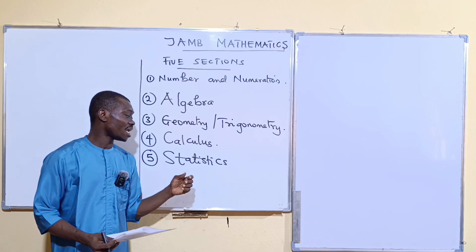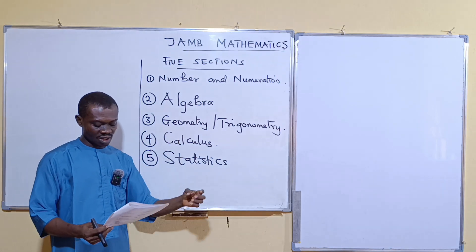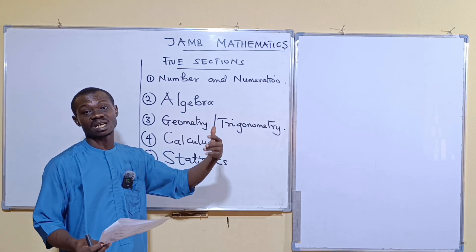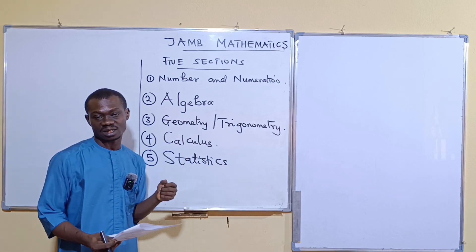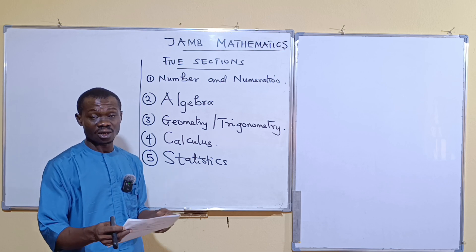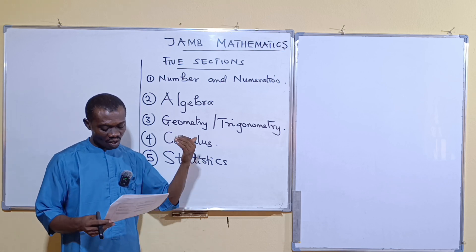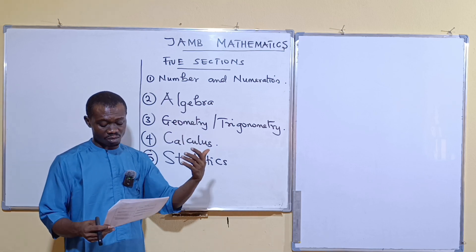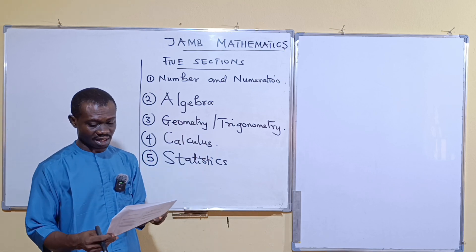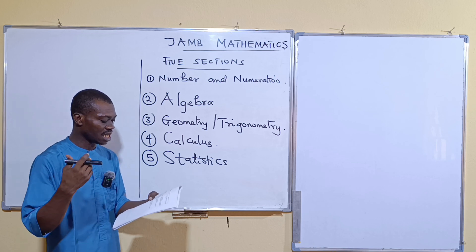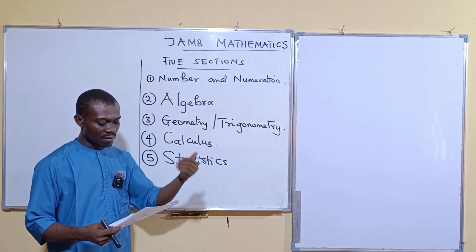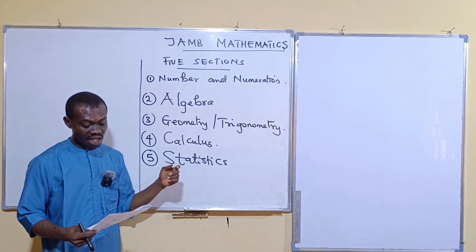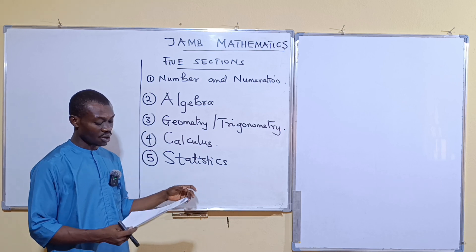And then for section five, you will see representation of data, that's frequency distribution, histogram, bar chart, pie chart. They love pie chart a lot, including bar chart, all those charts, histograms, right? Then measure of location. You talk about mean, mode, median, all those central tendencies, cumulative frequency, and the rest of them. Measure of dispersion, permutation, and combination. They are all under statistics. Then probability is also under here.